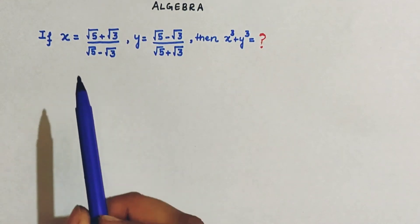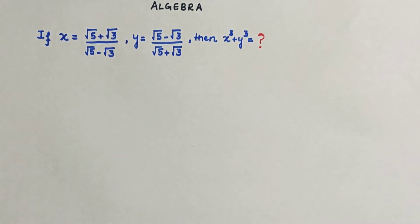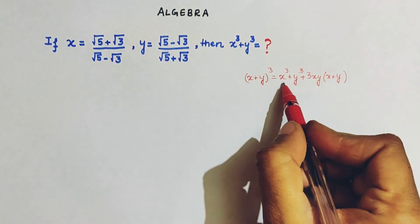So hello everyone, in this video we will see that we can easily simplify the questions of algebra like this. So we know an identity of algebra, right?